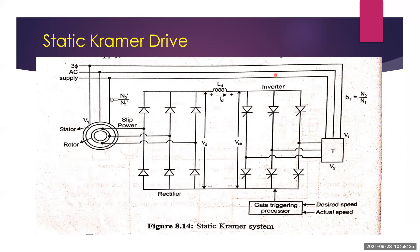Instead of wasting the slip power in the rotor circuit resistance, it can be converted into AC and fed back to the supply by using a transformer. This method is called the static Kramer drive. The slip power can flow in only one direction. This circuit diagram shows the static Kramer drive for speed control of a slip ring induction motor.